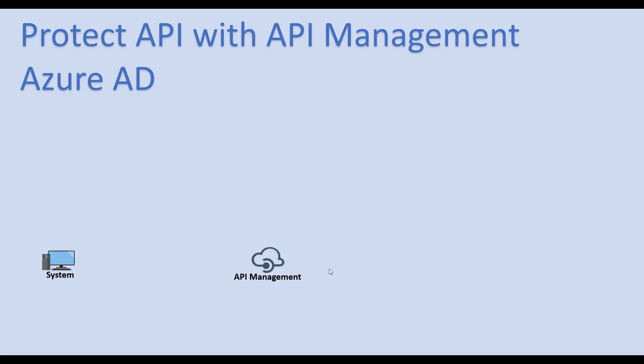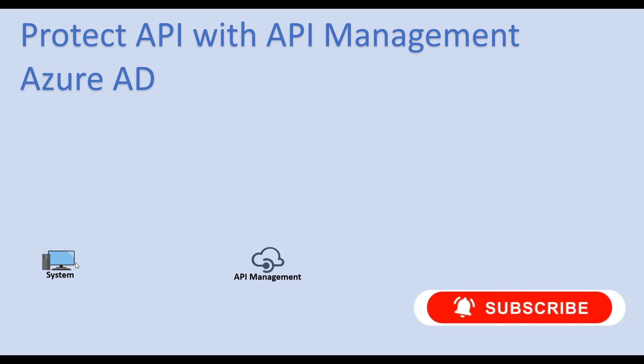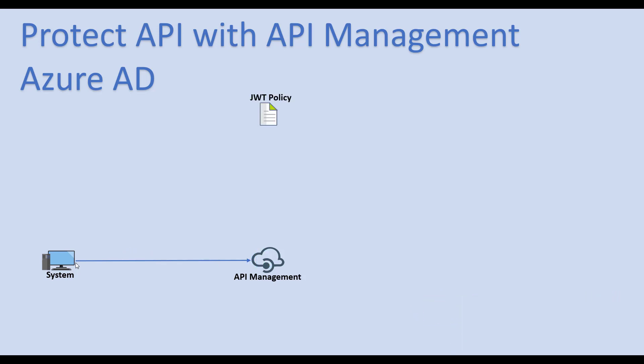Let me show you the configuration from this presentation. We have a system where the end user connects to the API via API Management. The user sends a request to API Management, where an inbound JWT policy is configured. That JWT inbound policy validates the request and ensures it contains the appropriate JWT token, then passes the request to the backend server.